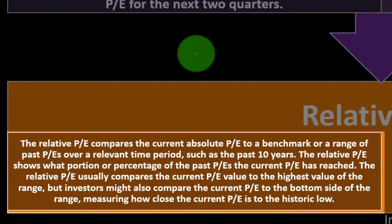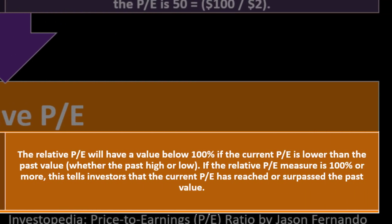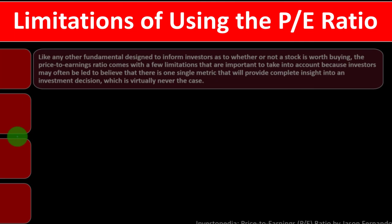Relative PE: The relative PE compares the current absolute PE to a benchmark or range of past PE values over a relevant time period, such as the past 10 years. It shows what portion or percentage of the past PE values the current PE has reached. The relative PE usually compares the current PE to the highest value of the range, though investors might also compare to the historic low. A relative PE below 100 means the current PE is lower than the past value; a relative PE of 100 or more means the current PE has reached or surpassed that past value.